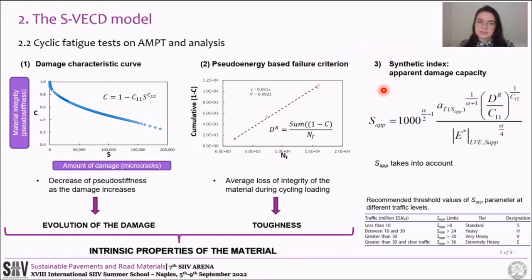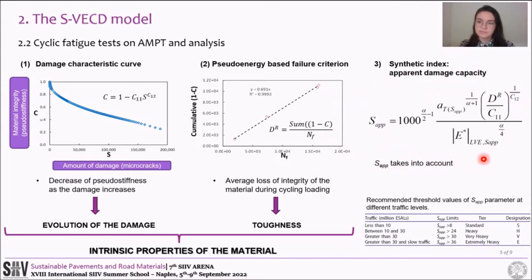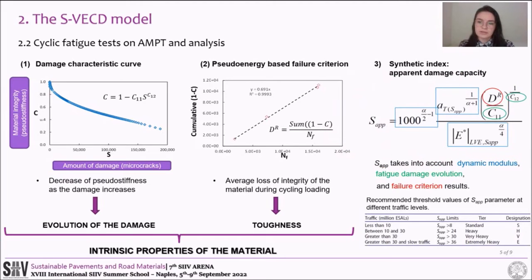Finally, the synthetic index SEP, or energy and damage capacity, is defined to summarize the fatigue performance of a mixture for comparison purposes. As seen in the formula, SEP takes into account dynamic modulus, fatigue damage evolution, and failure criterion results. Higher values of SEP indicate better fatigue performance.